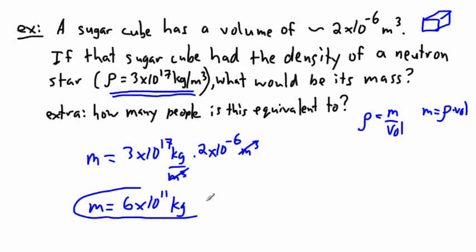That's the mass needed. If you took 6 times 10 to the 11, that would be 600 billion kilograms. That's extremely massive. If you squished that much mass into the size of a sugar cube, that would give you a density that is the same as a neutron star.